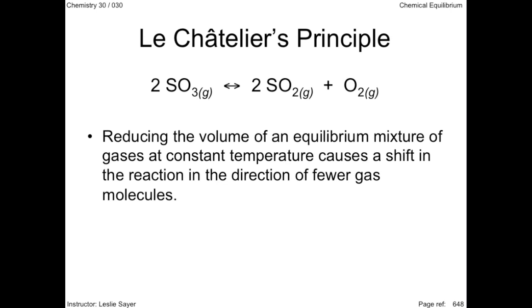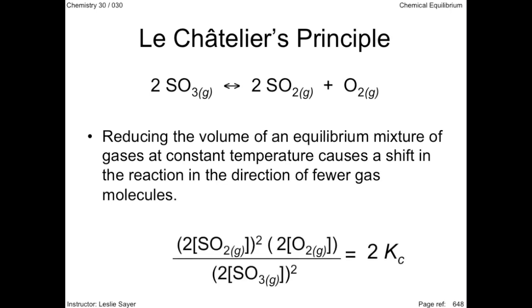In case this is not clear, imagine a decrease in volume of this gas mixture. All the gas particles now exist in a higher concentration, reactants and product. Let's say the concentration of everything doubles. The ratio of the doubled concentration is equal to twice the equilibrium constant. The system needs to decrease the concentrations of the products while increasing the concentration of the reactants, to bring the ratio back down to the original equilibrium constant.